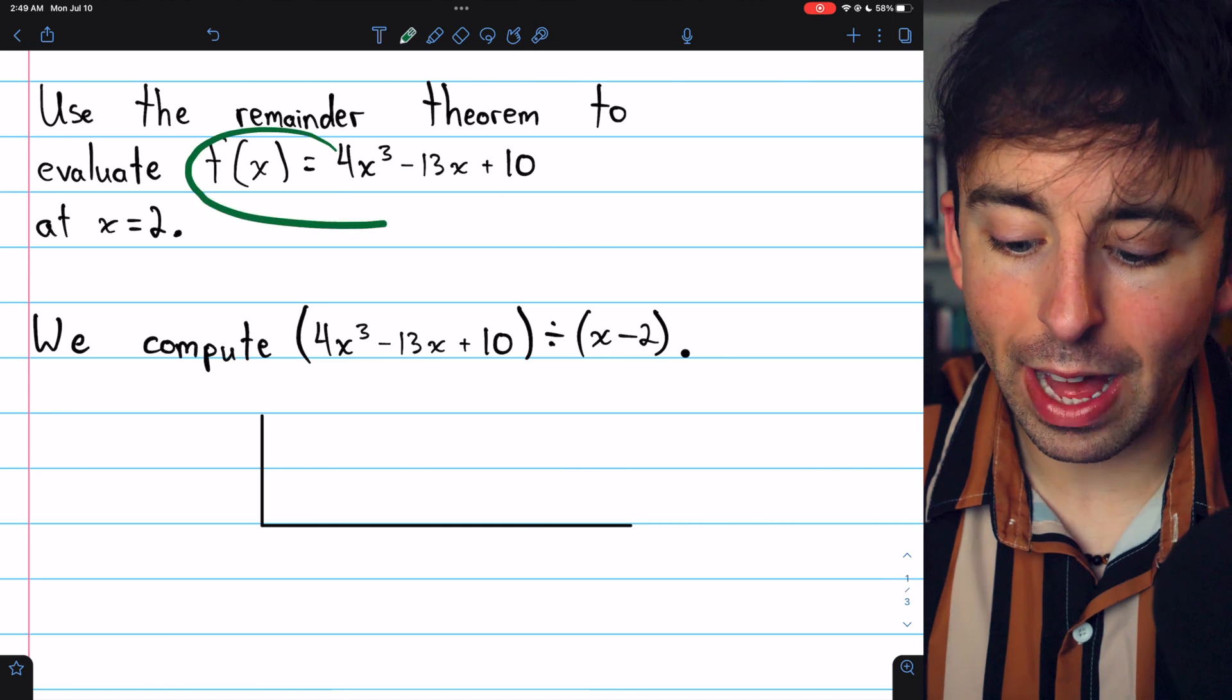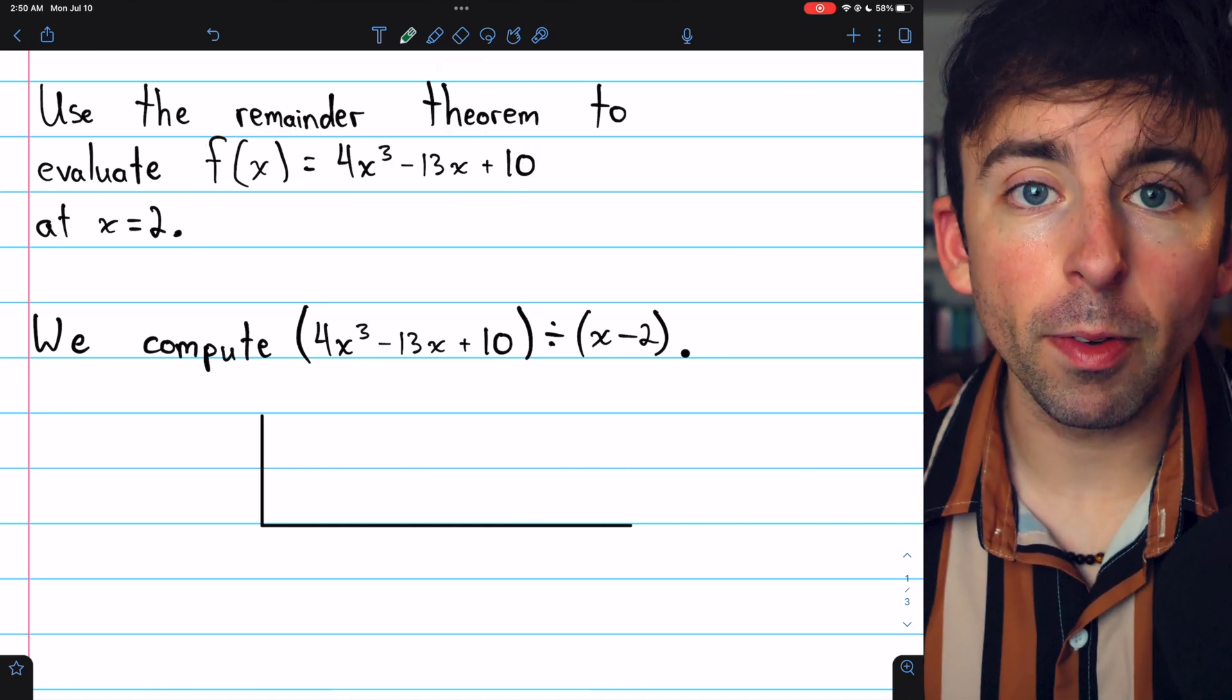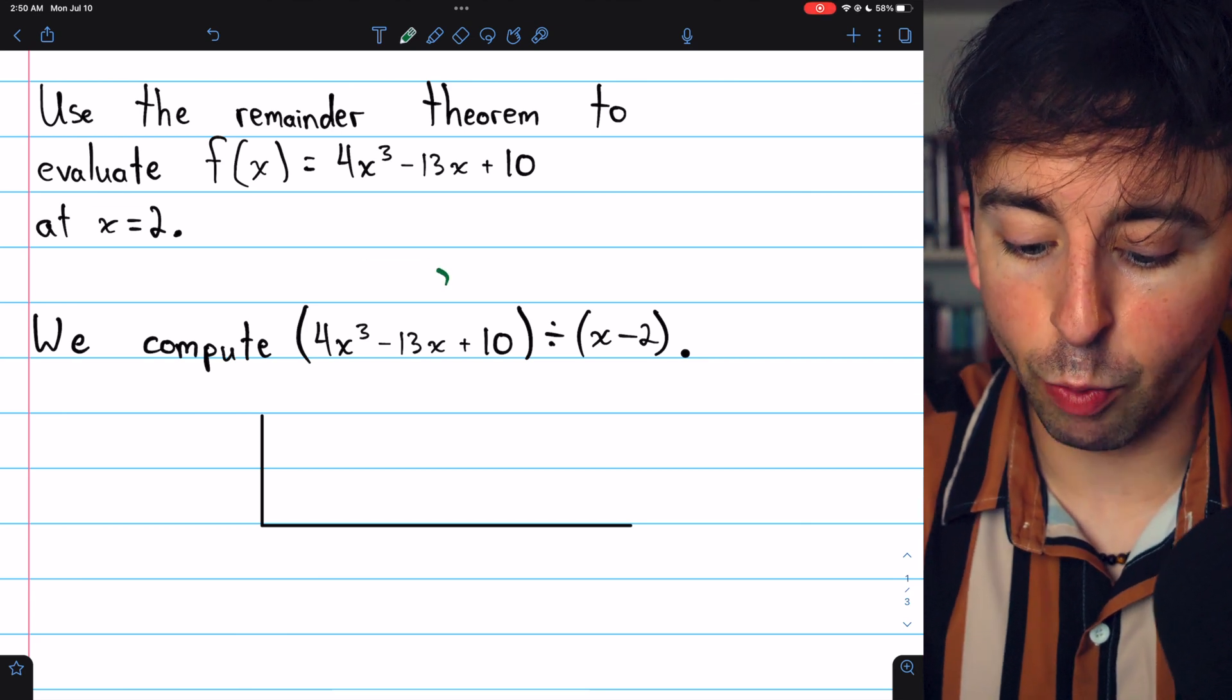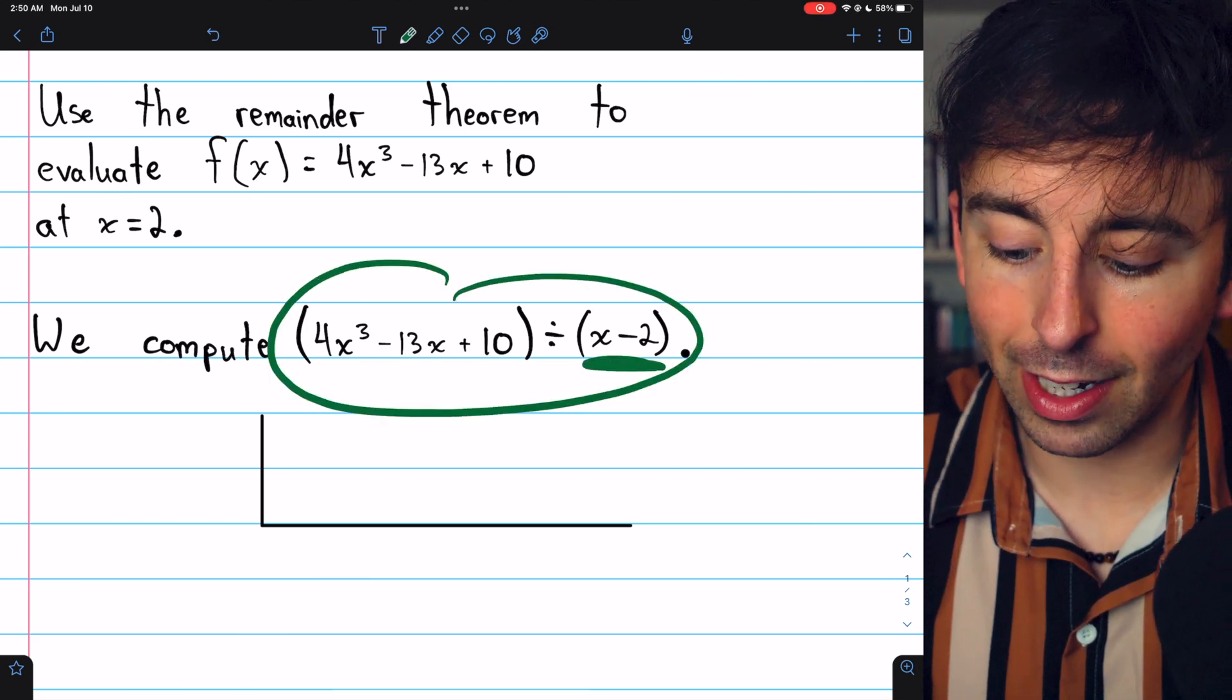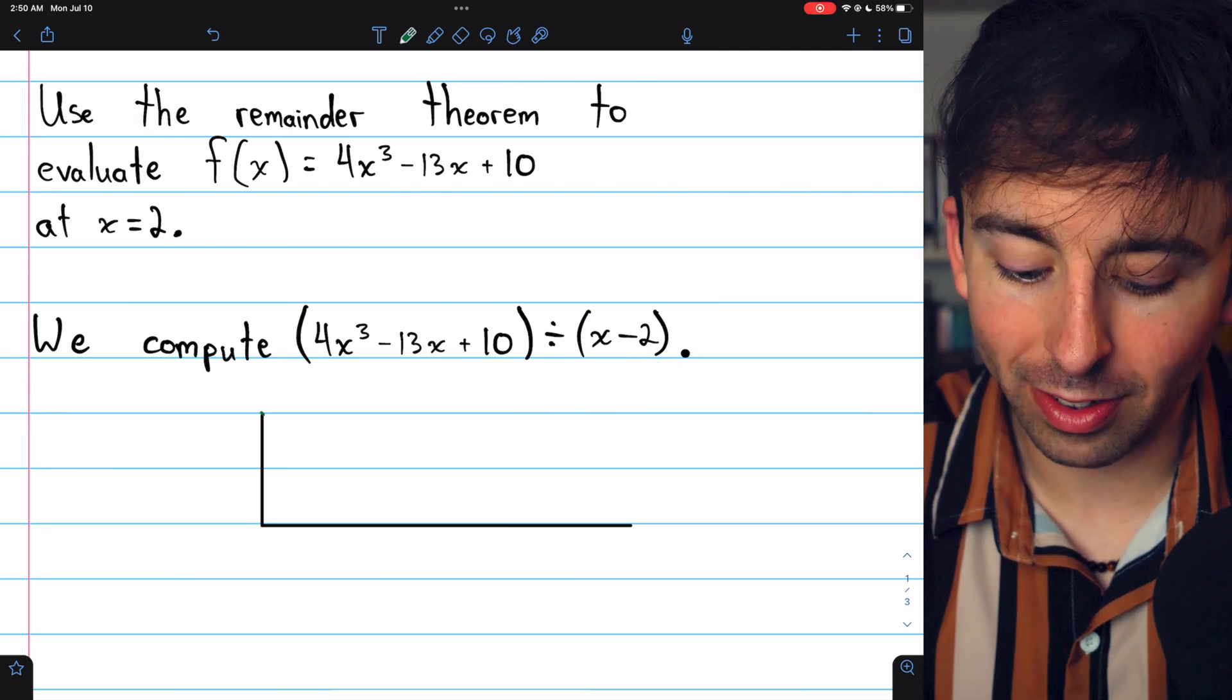Let's try it out to evaluate this function at x equals 2. By the remainder theorem, we can figure out what the function's value is at x equals 2 if we divide it by x minus 2 and then just look at the remainder.